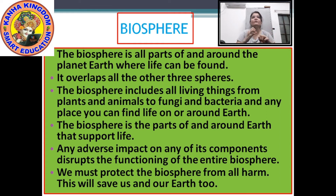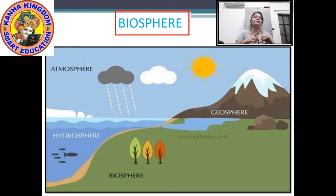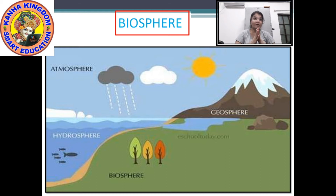Looking at the picture: atmosphere means the air surrounding everywhere; hydrosphere means water; geosphere or lithosphere means the land; and biosphere is the component that covers all three other components. This picture shows how the biosphere overlaps the other three spheres.